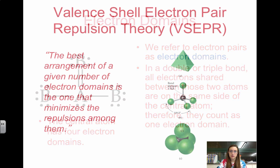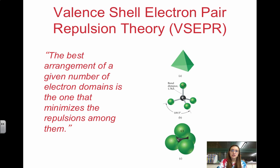The central atom has four. What the VSEPR theory says is that the best arrangement of a given number of electron domains is one that minimizes the repulsion among them. The best shape is based on the minimum repulsion.